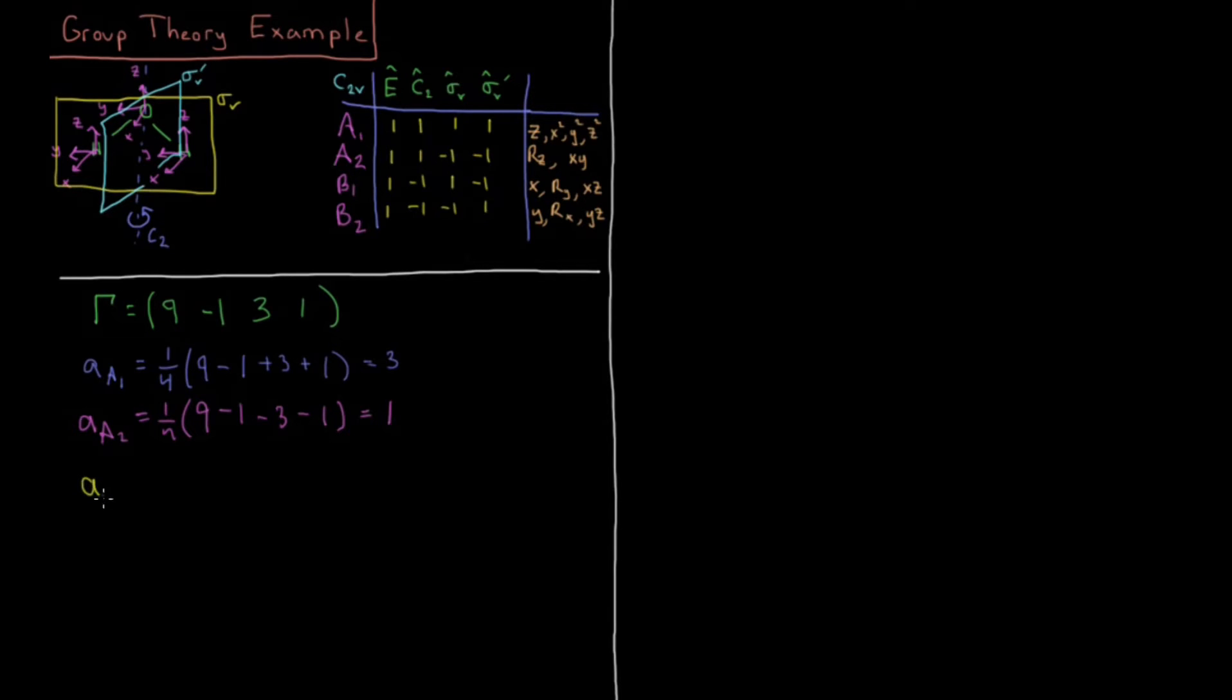Okay, we have A of B1 equals 1 fourth, 9 times 1 is 9, minus 1 times minus 1 is 1, 3 times 1 is 3, 1 times minus 1 is minus 1. 9, 10, 13, 12, divided by 4 is 3.